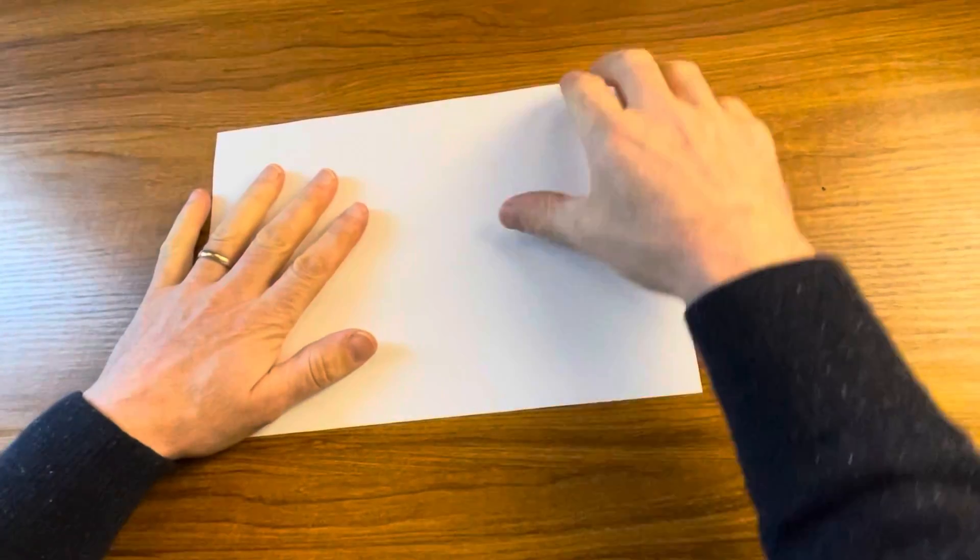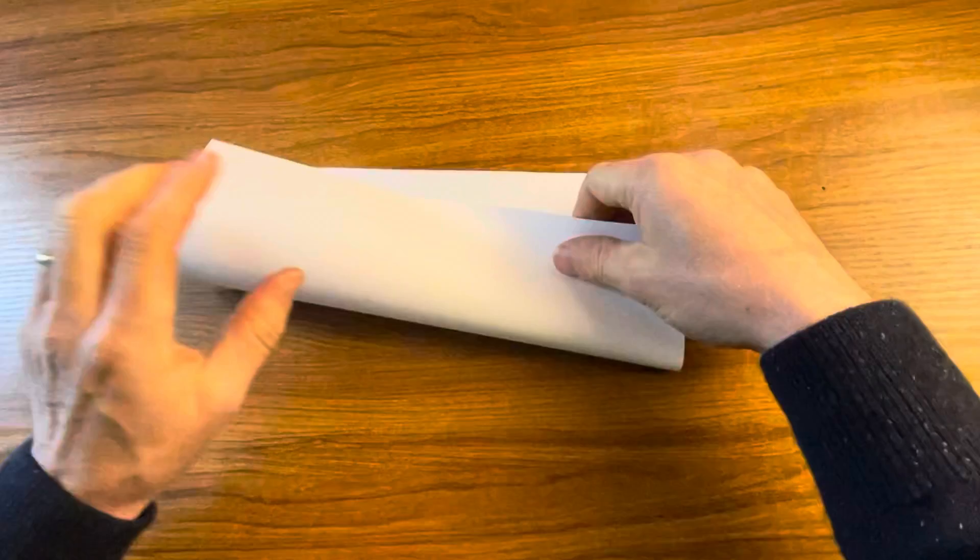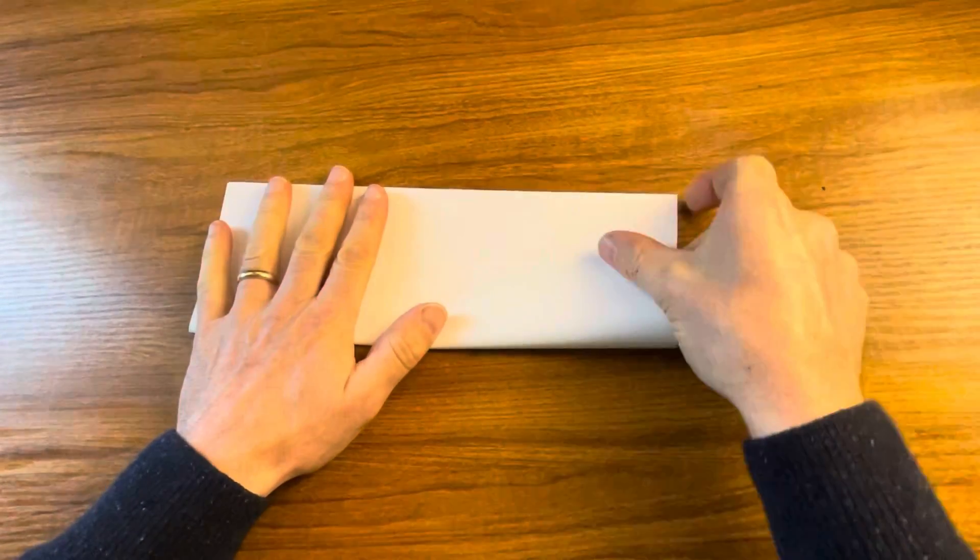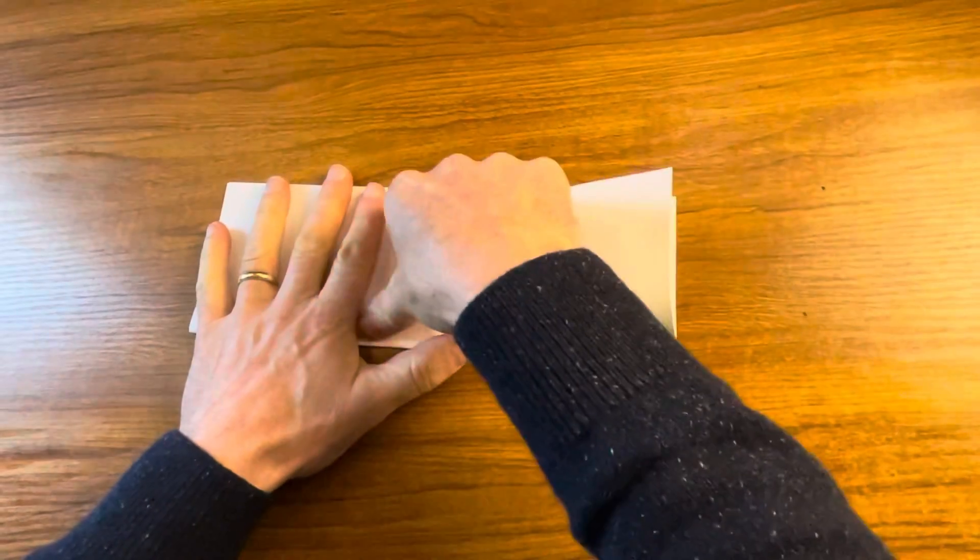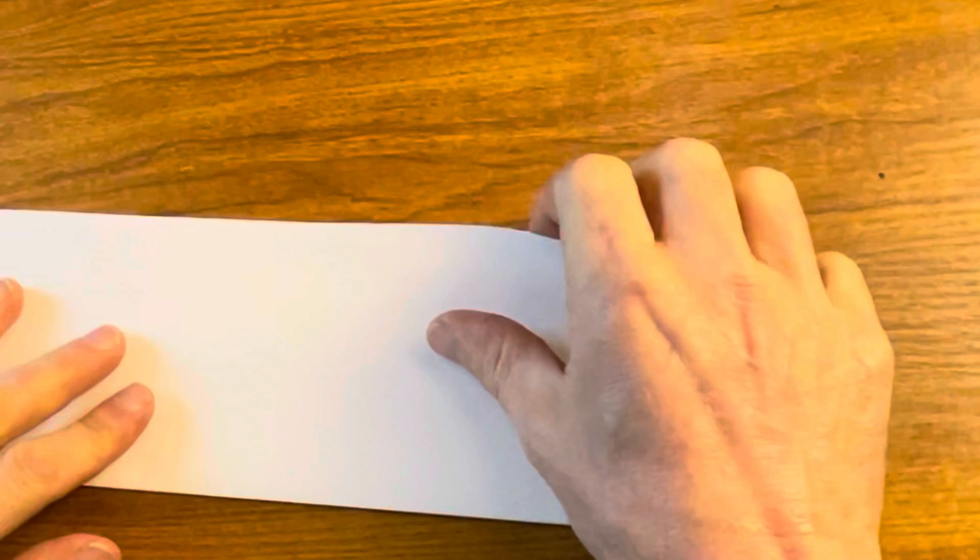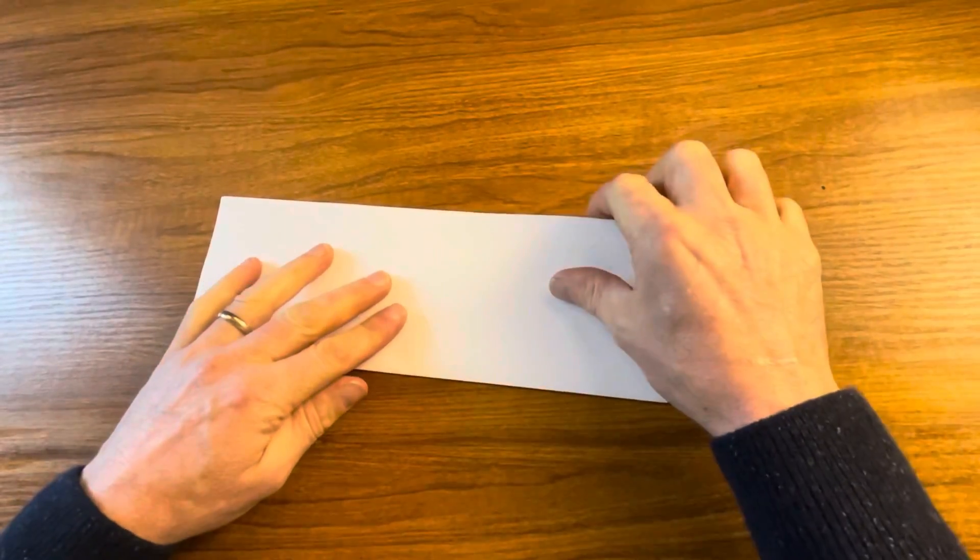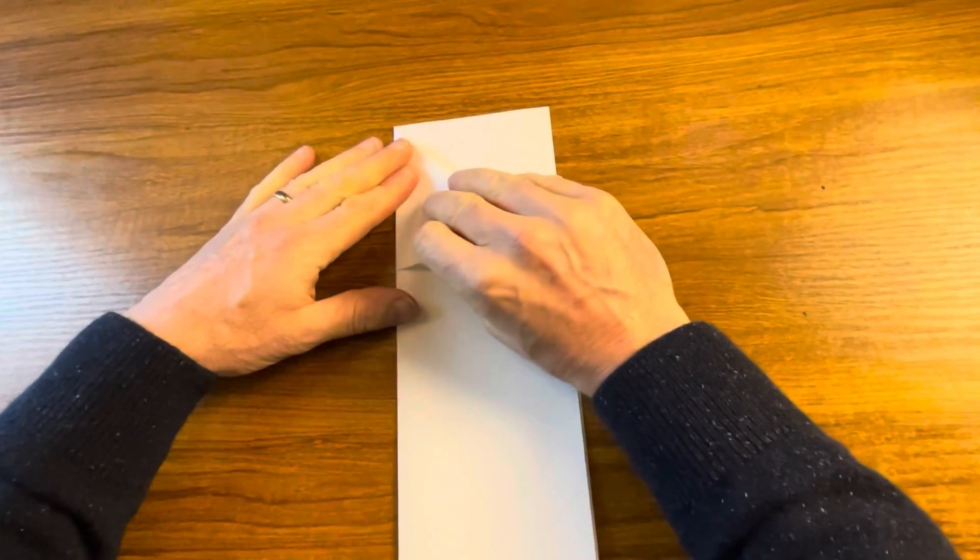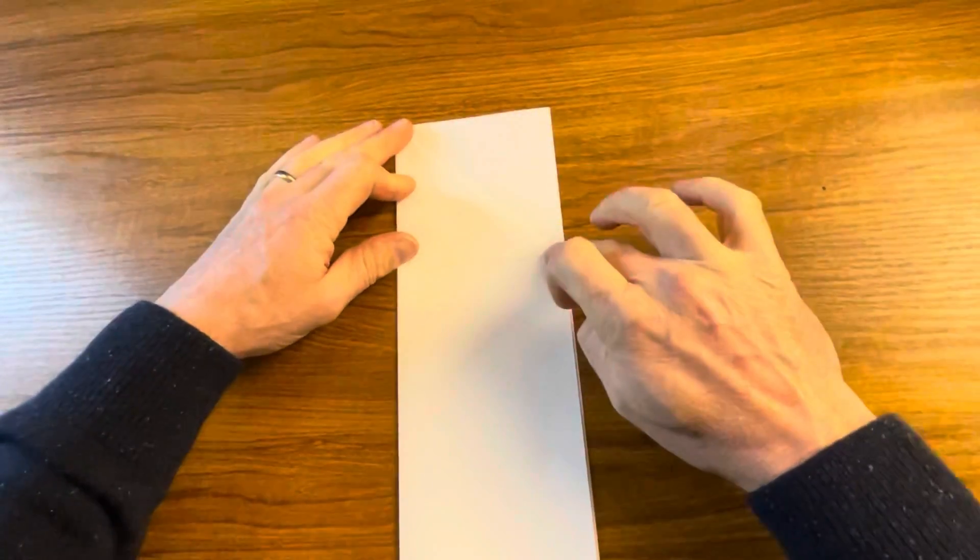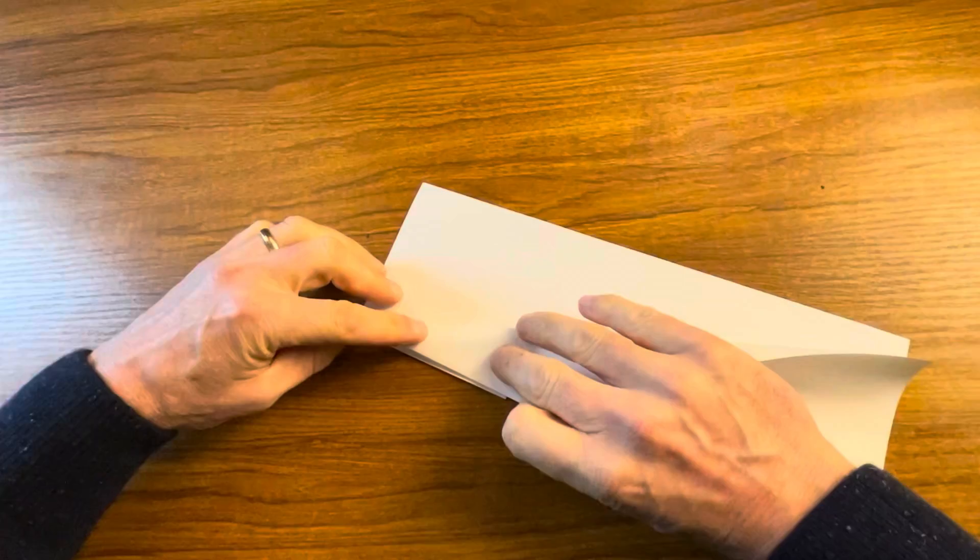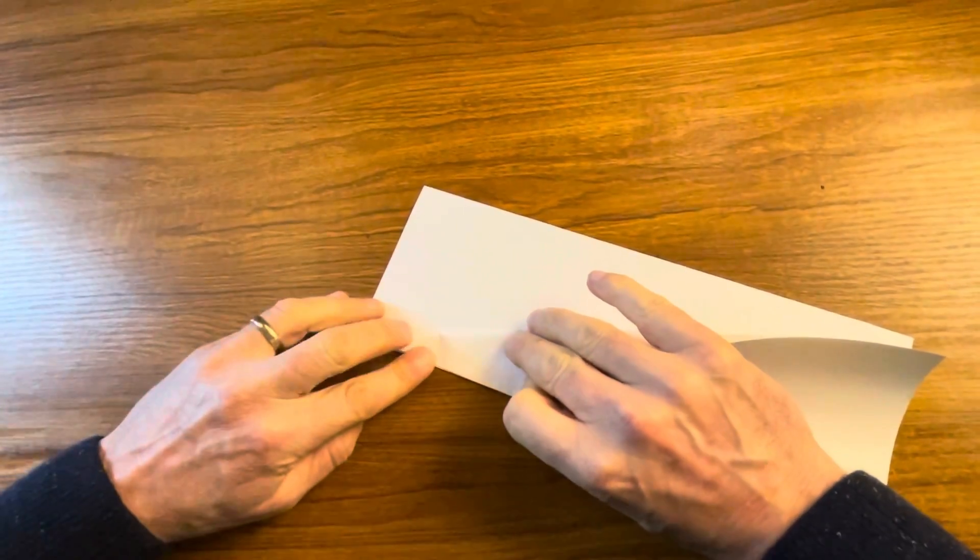The first thing we need to do is fold the paper in two lengthways, just like that. Now it's always very important to get to the very corners. Get the corners to meet exactly if you can. Now that's the first fold. Next thing we've got to do is peel this one back here like so, making a kind of triangle at the top there.